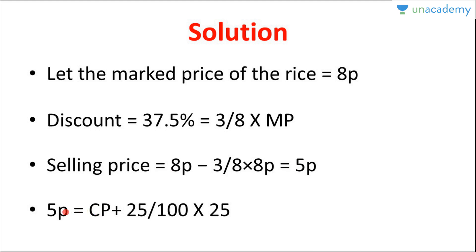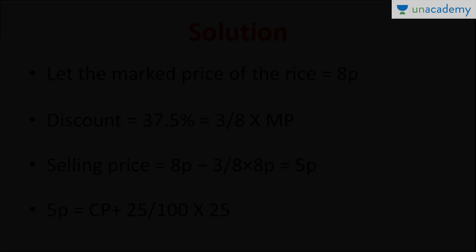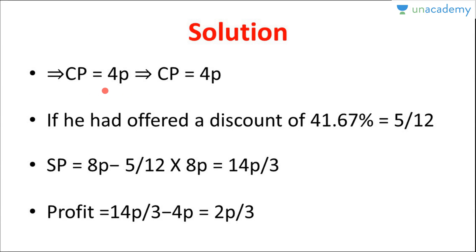Now, selling price equals cost price plus profit. So 5P = CP + (25/100) × CP. Solving this gives cost price = 4P.